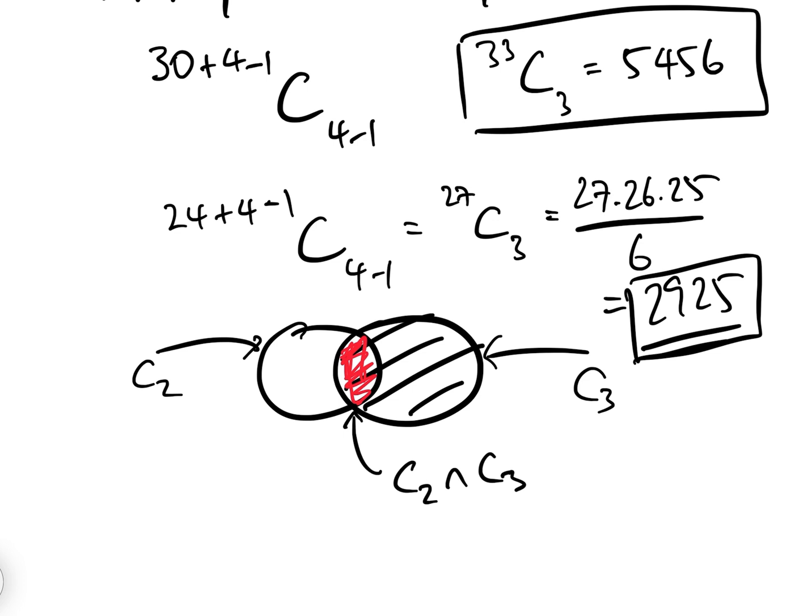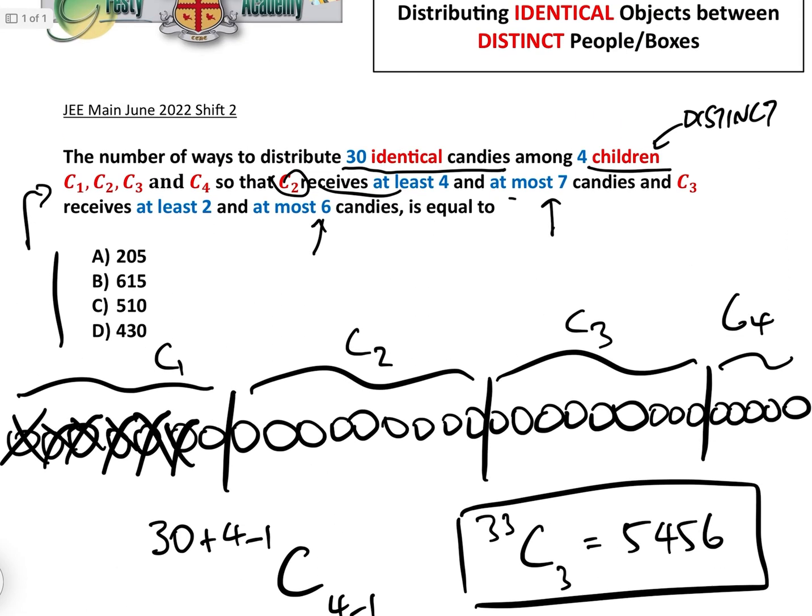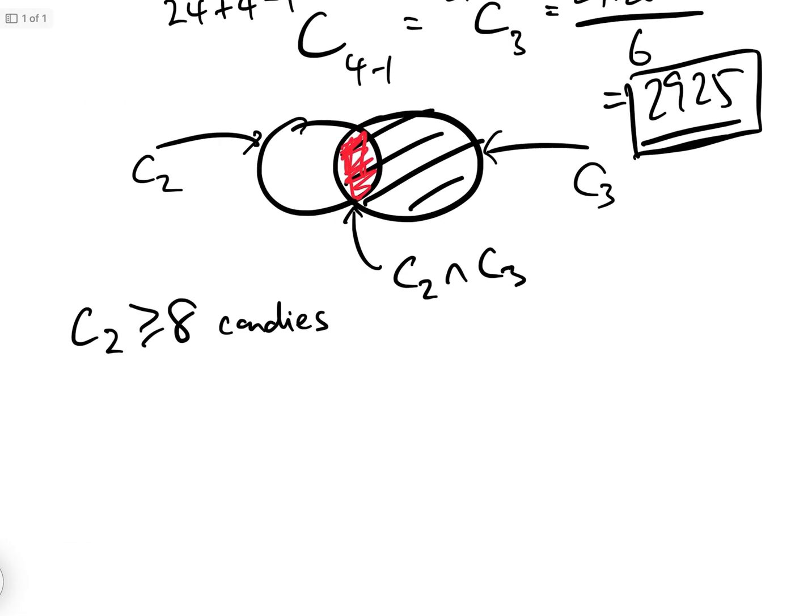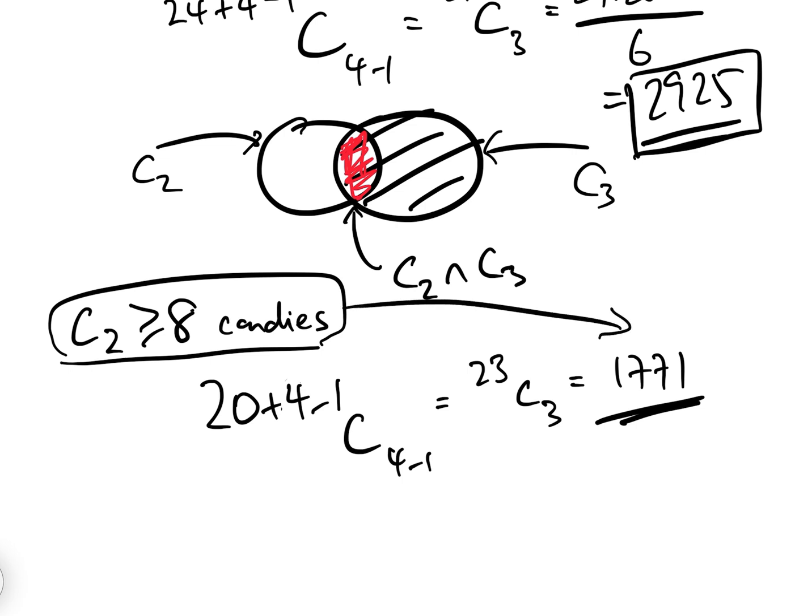So basically all we need to do is we've got A, so let's have a look at B. Let's take all the cases where C2 has greater than or equal to 8 candies, because we need to take them away, because C2 is not allowed to have more than 7 candies. So if he's got at least 8 candies, then we give him 8 candies. And remember, we have to give C3 two candies, so that means that we've given away 10 candies, which means there are 20 candies left, and the way we can distribute them is 20 plus 4 minus 1, C4 minus 1, which equals 23C3, which equals 1771 possibilities. There are 1771 possibilities where C2 can have more than 8 candies, and we have to take that away from this total.